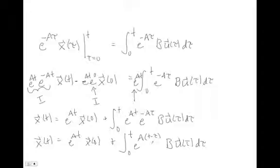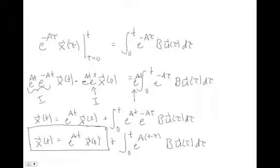Past inputs at time τ have effects weighted by e^(A(t-τ)). As that difference becomes large, their influence may decay or grow depending on whether the system is stable or unstable. This is the general solution for x(t) — not super clean, but easily solved numerically. If we ignore inputs entirely, the zero-input response x(t) = e^(At)·x₀ is very simple and easy to analyze, making e^(At) an extremely important matrix.